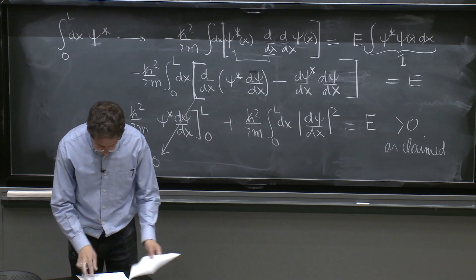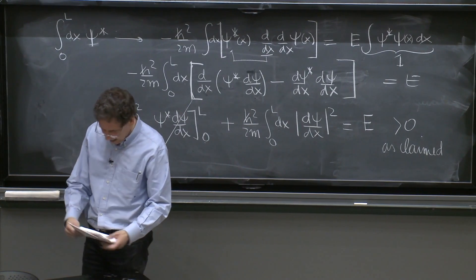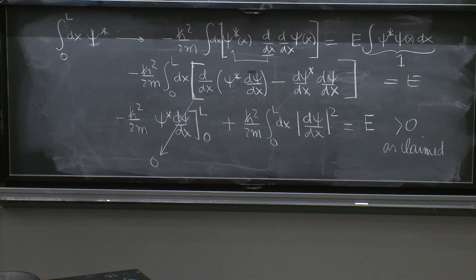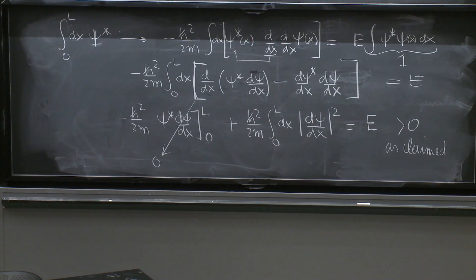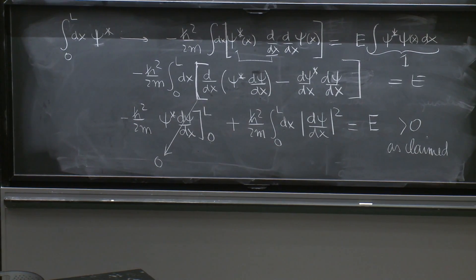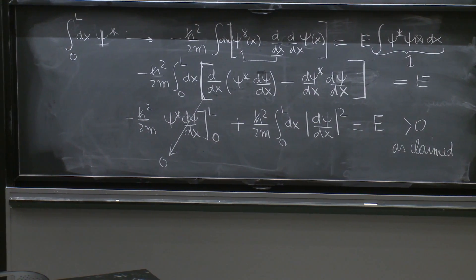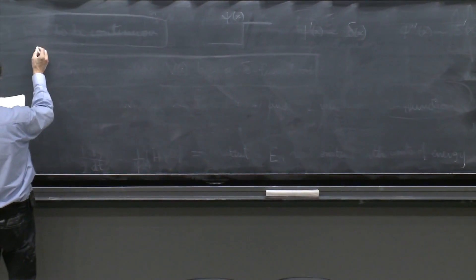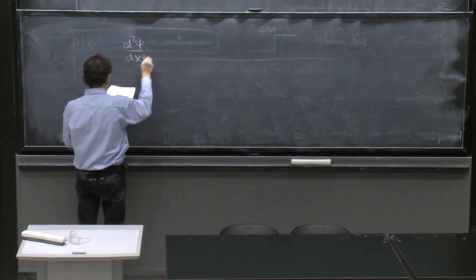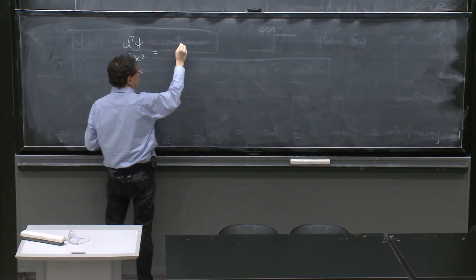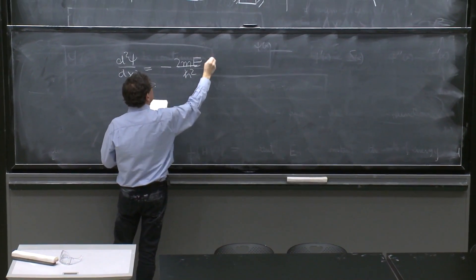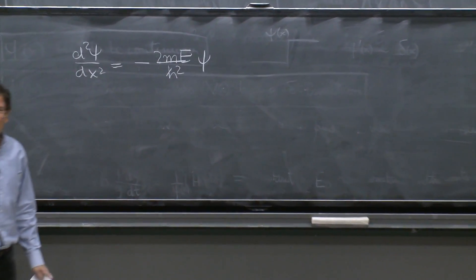So E is greater than 0. So let's just write a couple of solutions and stop. We'll comment on them more next time. But let's get the solutions, because after all, that's what we're supposed to do. The differential equation is d second ψ/dx squared is equal to minus 2mE over ℏ squared ψ.